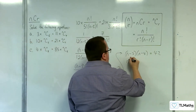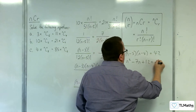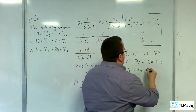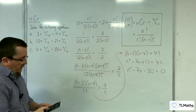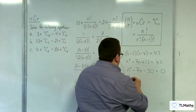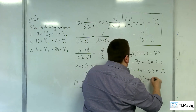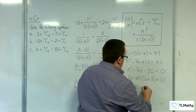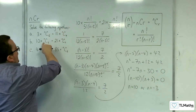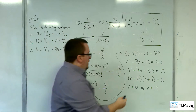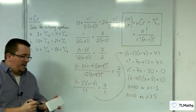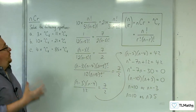Expanding the quadratic: n² minus 7n plus 12 equals 42. Subtracting 42 from both sides: n² minus 7n minus 30 equals 0. Factoring gives (n minus 10)(n plus 3) equals 0, so n equals 10 or n equals minus 3. For nC5 to exist, n must be greater than or equal to 5, so n equals 10 is the answer to part b.